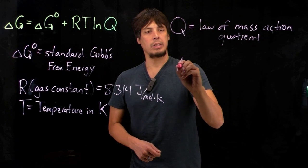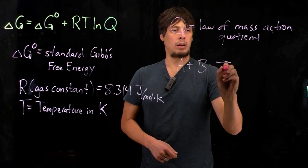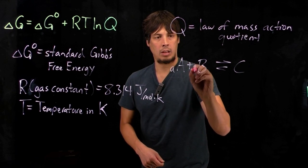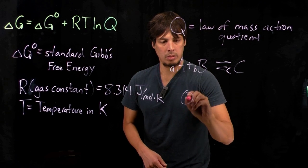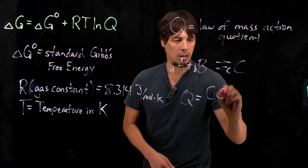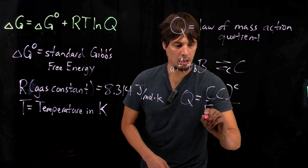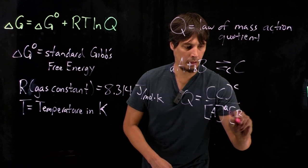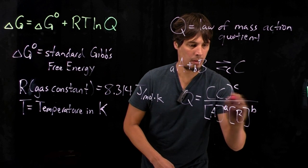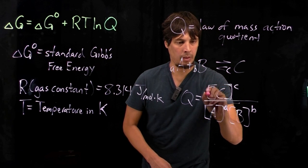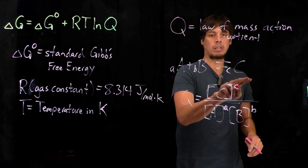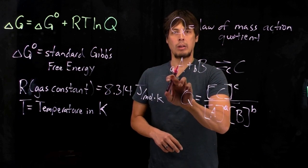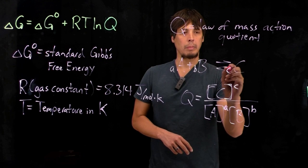So recall, for a reaction, for instance shown here, Q is going to be equal to this equation here, where these are concentrations of the product C and concentrations of the reactants A and B, and these are multiplied to the power of their stoichiometry within the balanced equation.